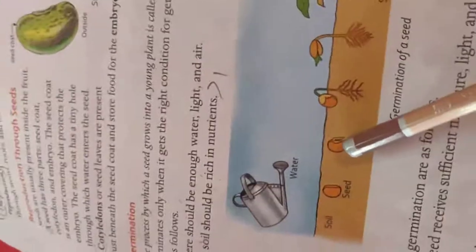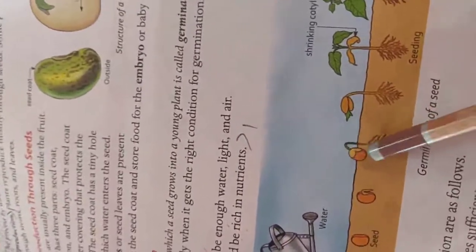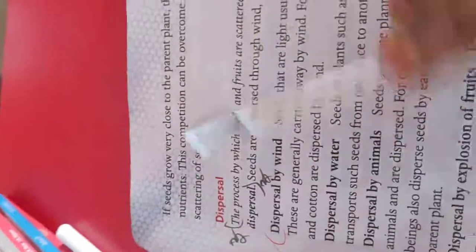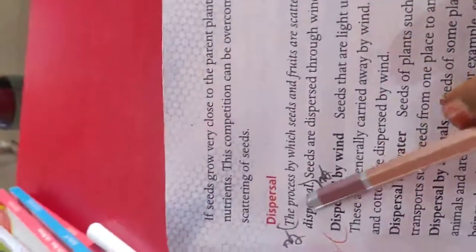If seeds grow very close in a parent plant they will compete for air, water and nutrients. This competition can be overcome through a process called dispersal. The process by which seeds and fruits are scattered away from the parental plant is called dispersal. Seeds are dispersed through wind, water and animals.